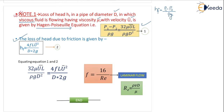Second case: the loss of head due to friction is given by HF equal to 4F L V square by D into 2g. This is the friction factor formula for the pipe. There will also be some loss due to the presence of friction when the pipe surface is not smooth — rough surface. So that loss of head is given by HF equal to 4F L V square by D into 2g, where F is the coefficient of friction.